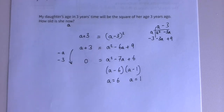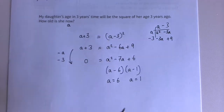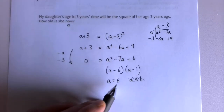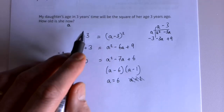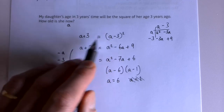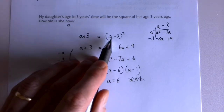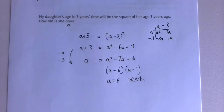So do we have two possible answers? I hope you can see that we don't, because she can't be one year old now - this question talks about three years ago, and you can't be minus two years old. We haven't made a mistake; that's just not a valid answer. Let's test with a = 6: in three years' time she'd be nine; three years ago she'd have been three; and three squared is nine. Yes, that works. So she is six years old now.